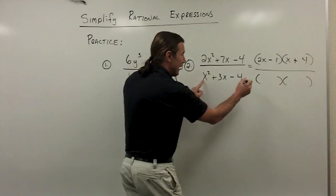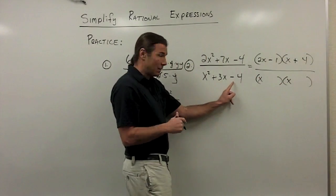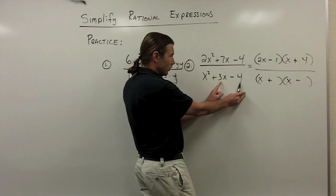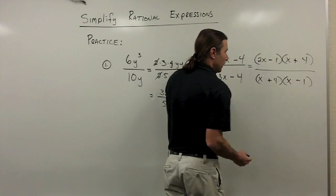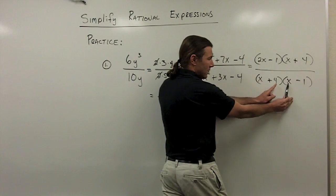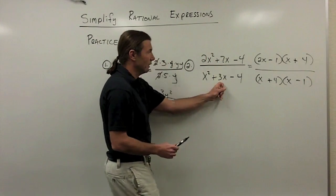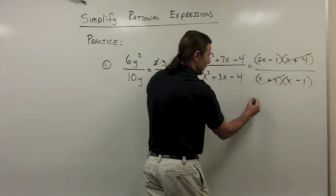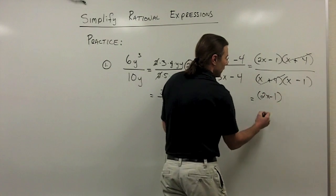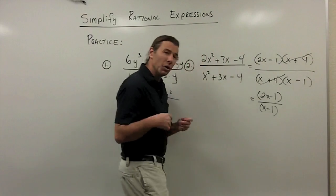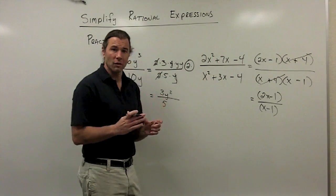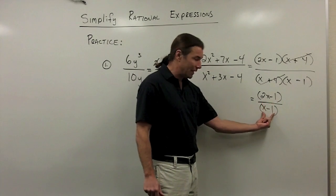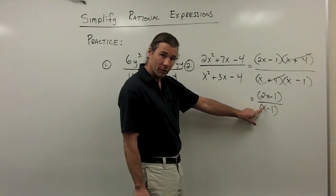Now I'll factor the denominator. I'll need an x and an x. Again, the last term is negative, telling me I need plus and minus. I need a product of 4 with a difference of 3, so I'll choose 4 positive and 1 negative. The outsides give negative 1x and the insides give positive 4x, which gives me the positive 3x middle term. Now I'm looking for common factors, and I do have a common factor of x plus 4, so I divide that out. My final answer is (2x minus 1) over (x minus 1). I'll leave the parentheses because it helps you think of these as one factor — I don't want to try to divide the x out with that x, as that would give an incorrect solution.